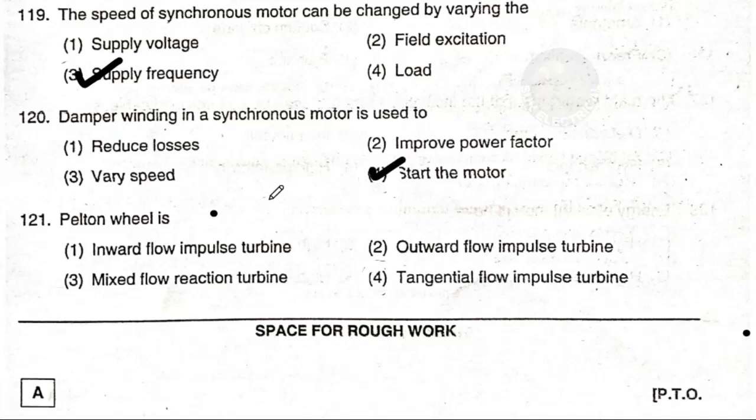The Pelton wheel is: option 1 inward flow impulse turbine, option 2 outward flow impulse turbine, option 3 mixed flow reaction turbine, option 4 tangential flow impulse turbine. The answer is option 4 — tangential flow impulse turbine. The Pelton wheel is a tangential flow impulse turbine.